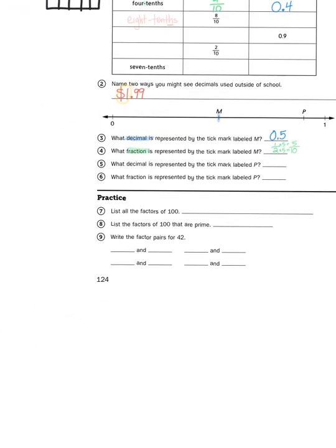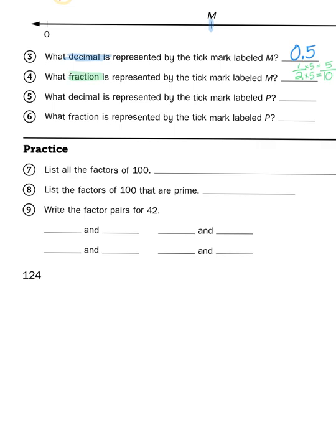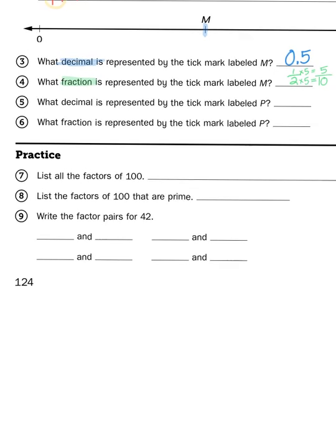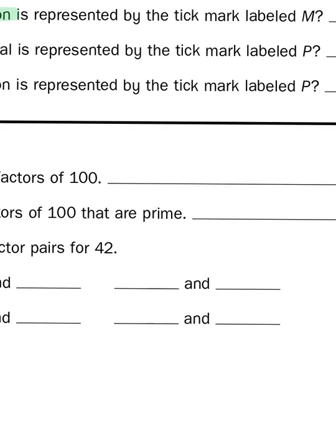Then finally, down at the bottom, we have some review of factors. List all the factors of 100. Well, that's really useful to know, especially when we talk about money, because there are 100 cents to a dollar. So, what are all the different ways you can multiply two numbers together to get to 100? Well, you could have one dollar bill, which is 100 cents, 1 times 100.